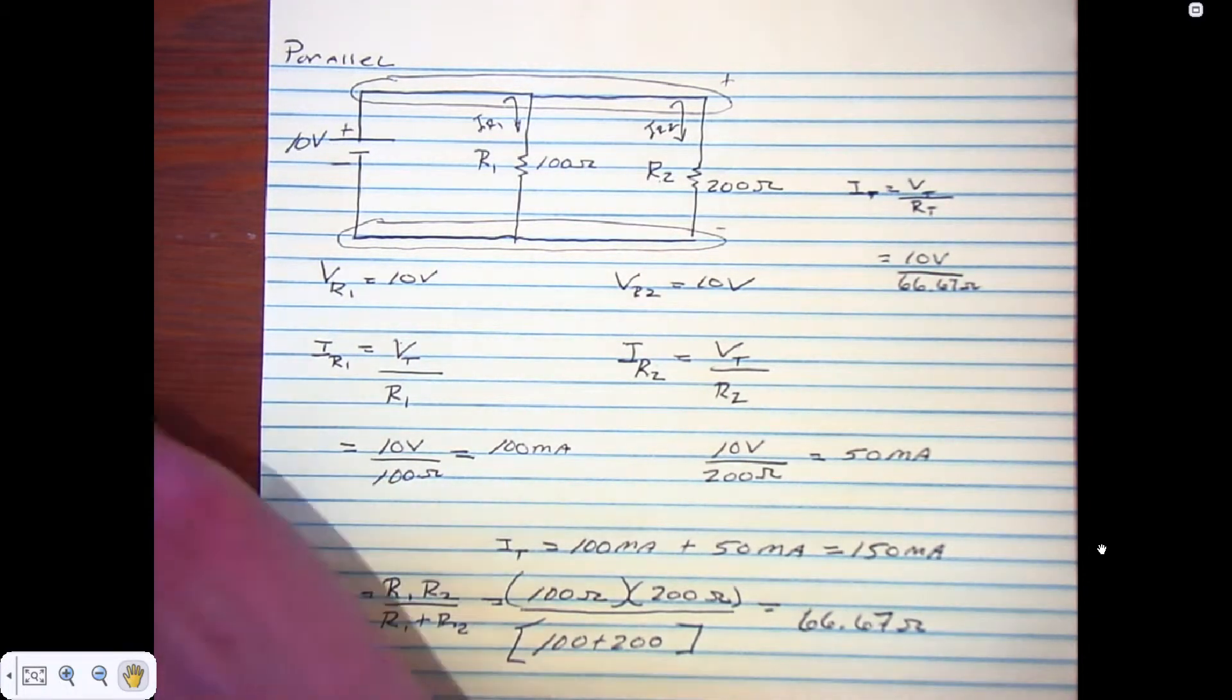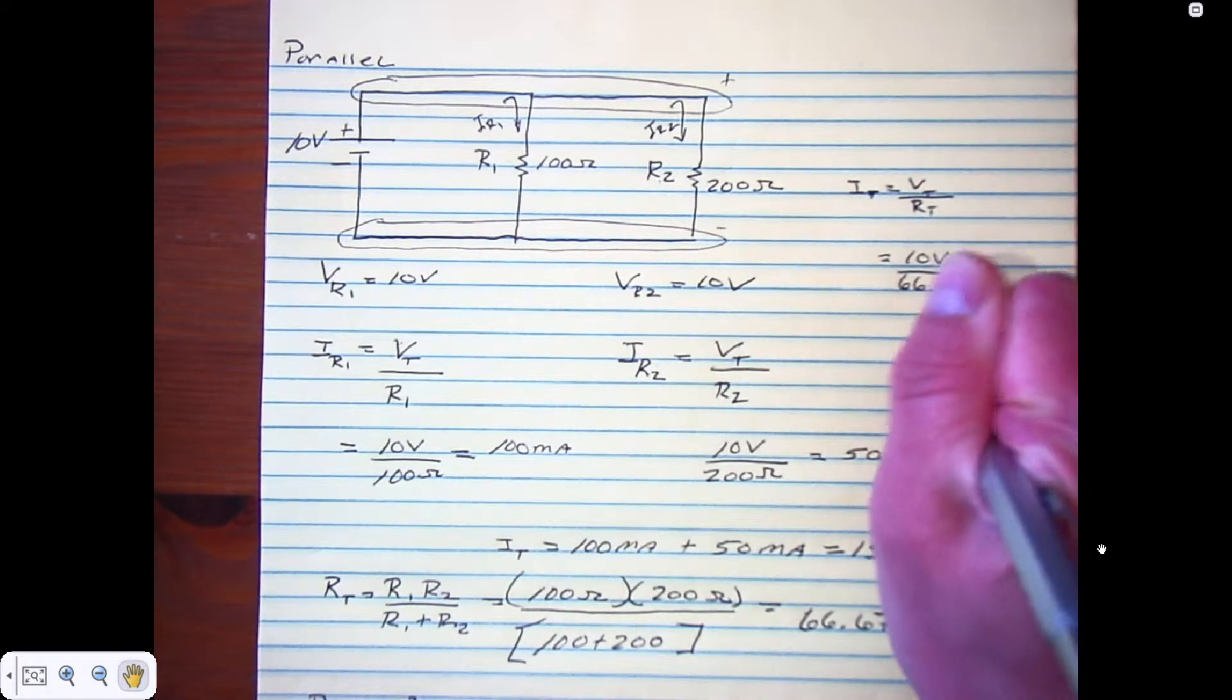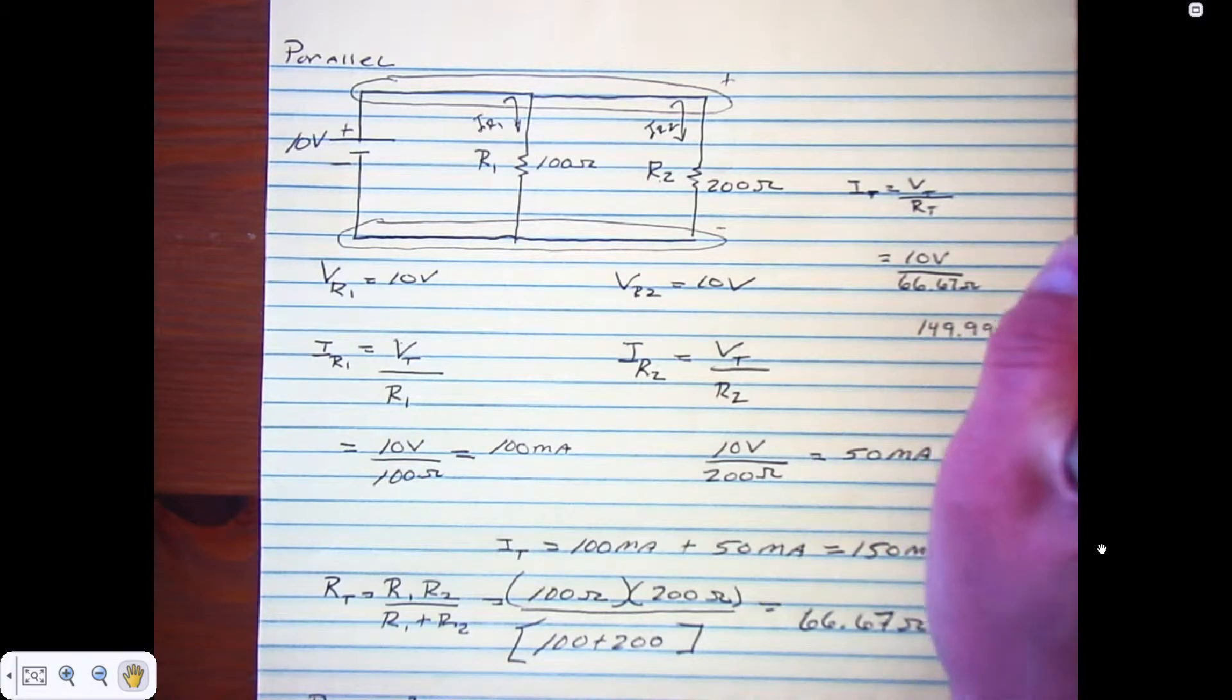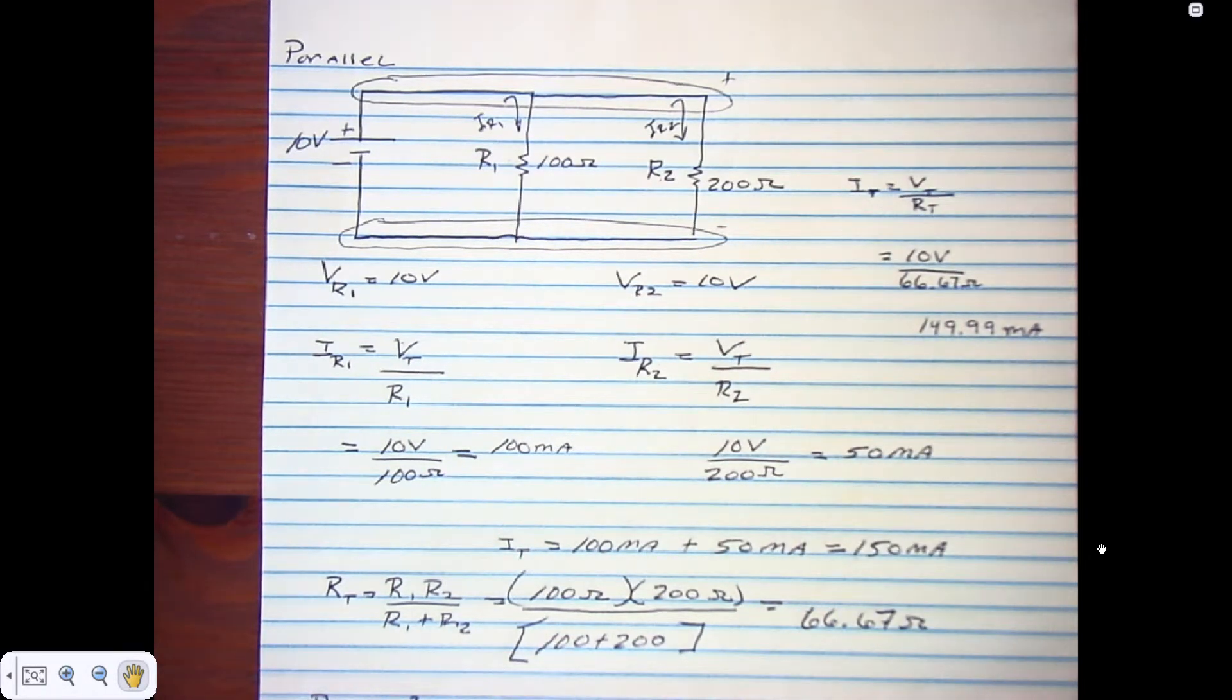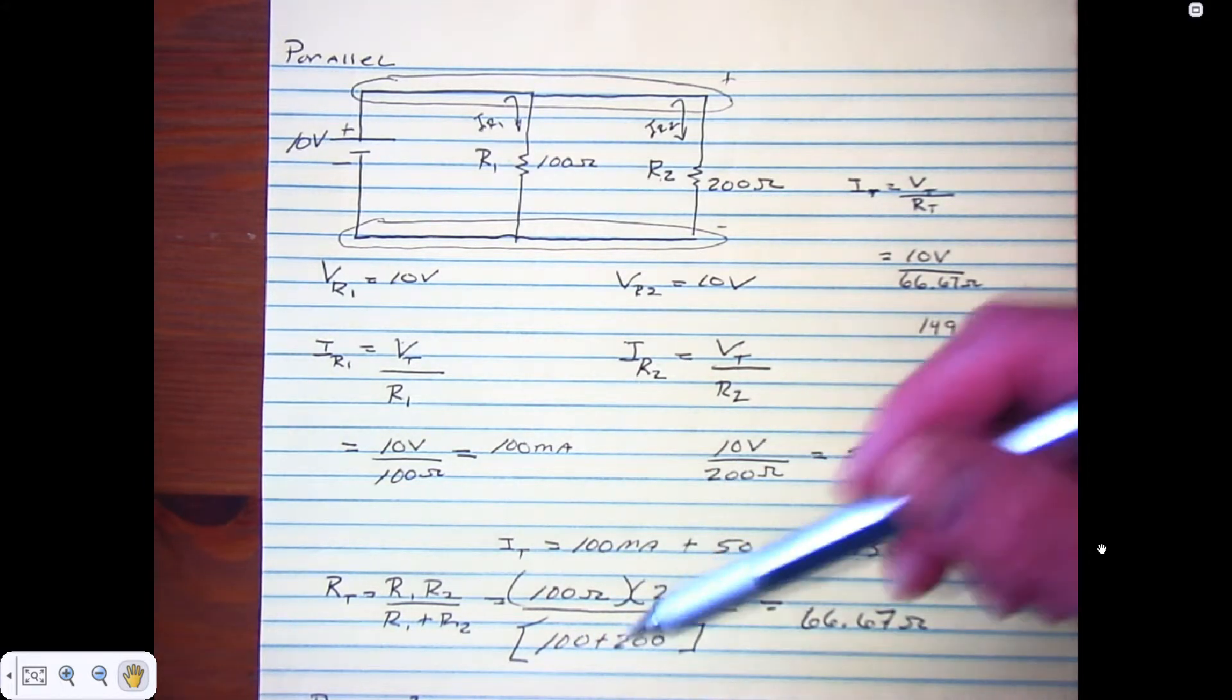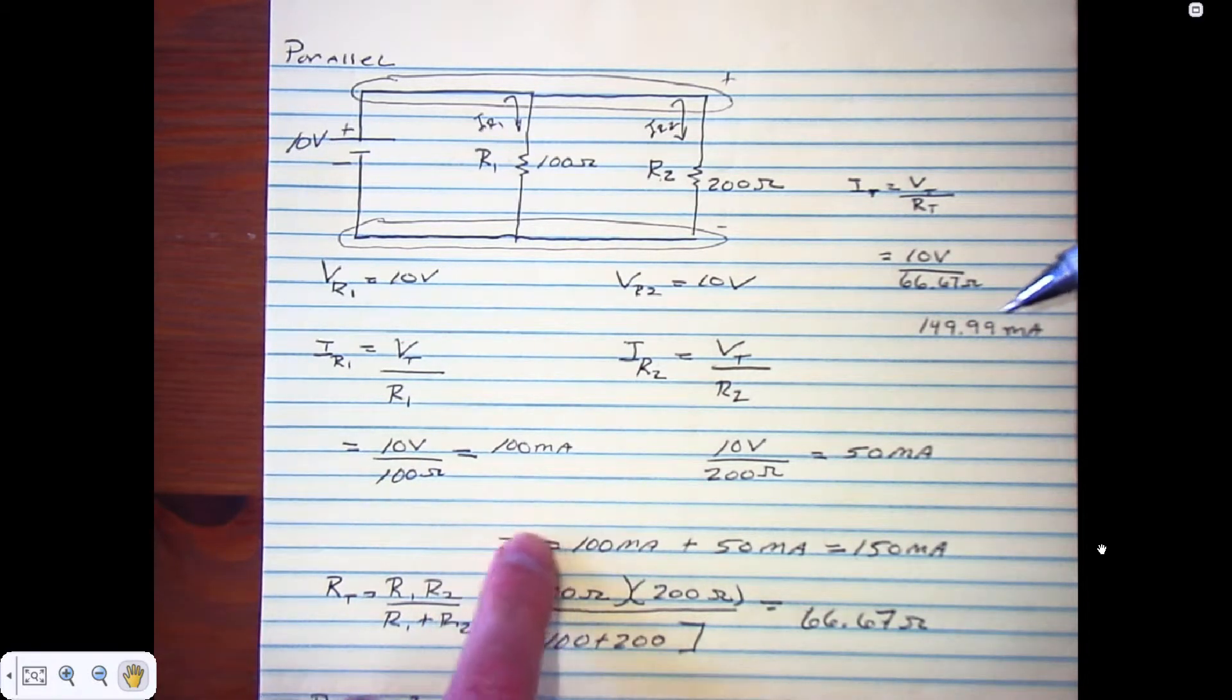If I take 10 volts divided by 66.67 ohms, I get about 149.99 milliamps, which is very close to the 150 milliamps. So we know that our R total is good, and we know that the I total we came up with using Kirchhoff's current law is good as well.